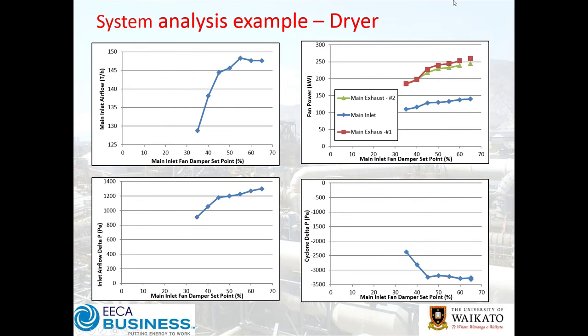To finish, let's go through a case study — a dryer. There are four charts: the upper left shows airflow in tonnes per hour based on fan damper set points. This was a fixed-speed fan with an inlet damper. The particular supply fan was operating at 65% and the exhaust fans on the system were actually at 100% — they were struggling to control the system.